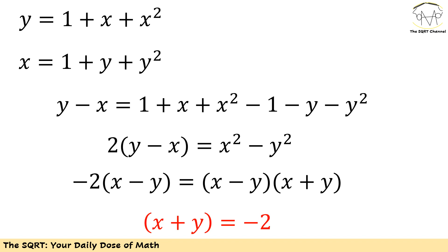Now that we have started with adding these equations together, the second approach is going to be subtracting the second equation from the first one. Then I have y minus x equals 1 minus 1, x minus y, x squared minus y squared.